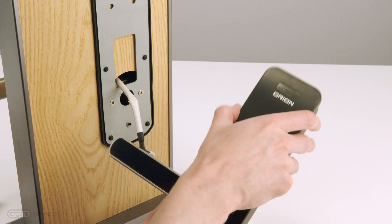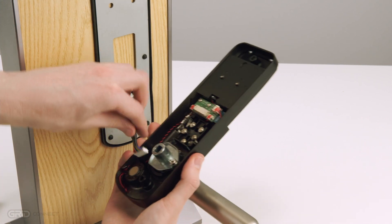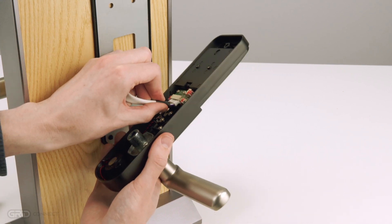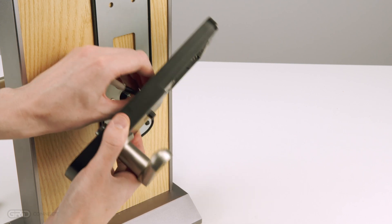Remove the battery cover from the back panel, then connect the wire from the front panel to the connector on the inside of the back panel. Make sure to press firmly and ensure the cable is properly connected.